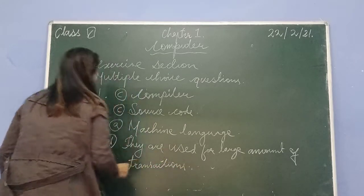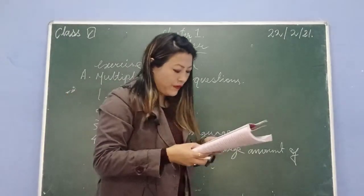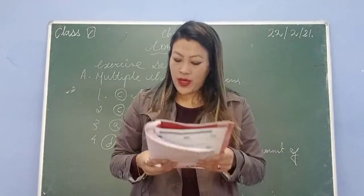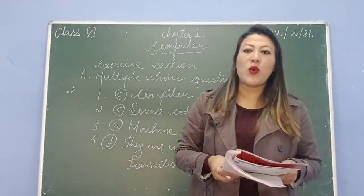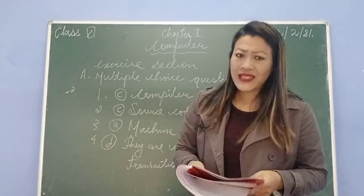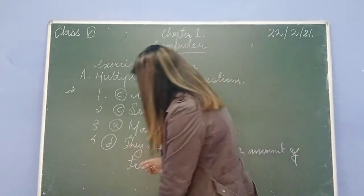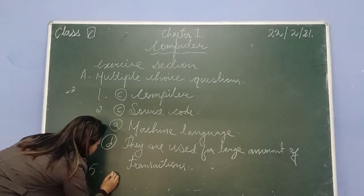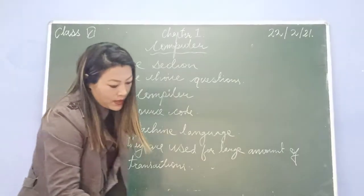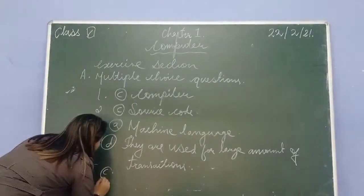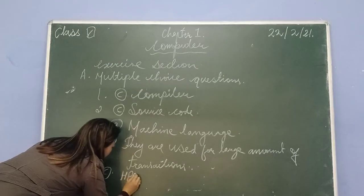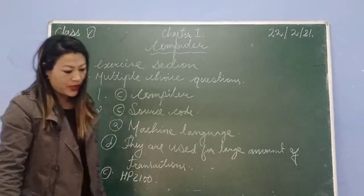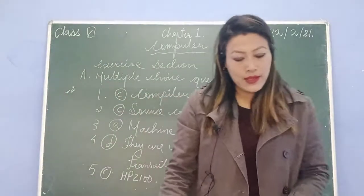That statement is not true. Number 5: a mini computer is - options include gaming console, desktop, HP 2100, and PDP 10. HP 2100 is an example of a mini computer, so your answer will be C - HP 2100. You have to write this in your copy.